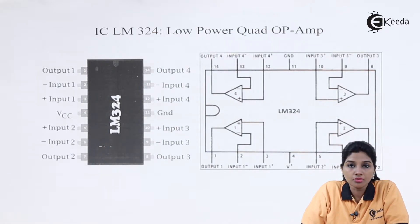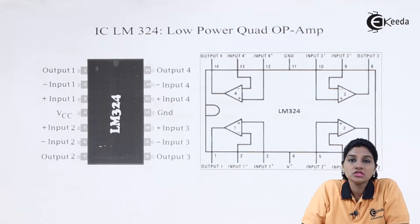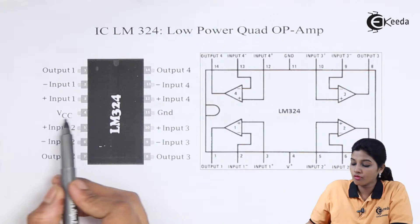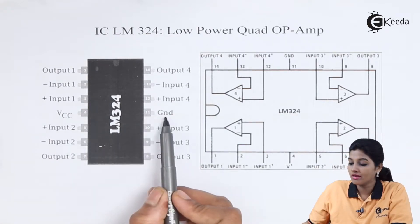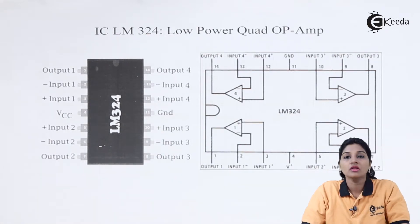It has four inverting input terminals and four non-inverting input terminals. In the IC, VCC and ground is provided with a single pin. That means pin number four is used for VCC connection and pin number 11 is used for ground connection.